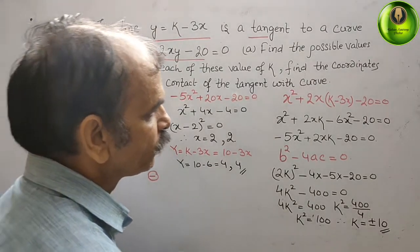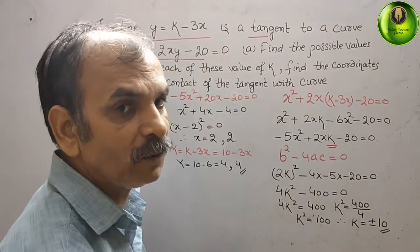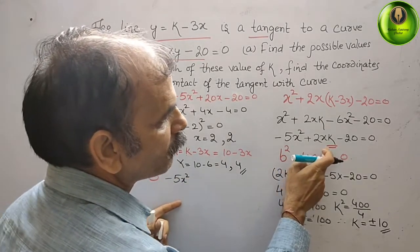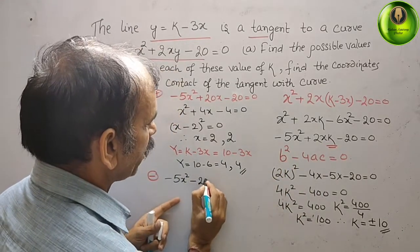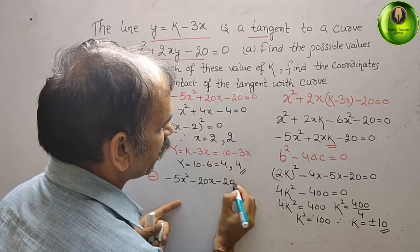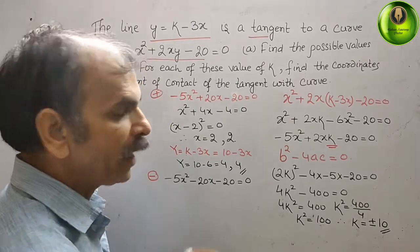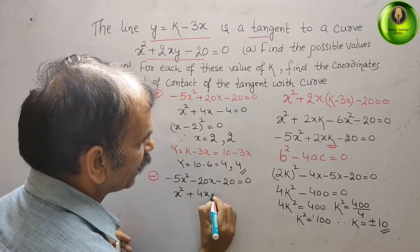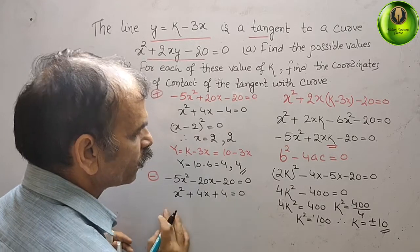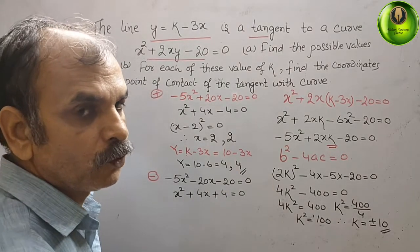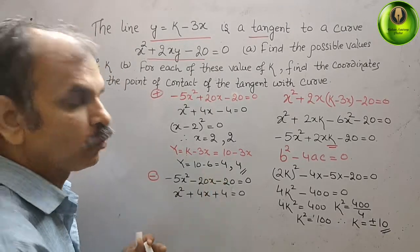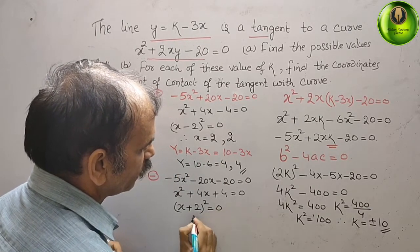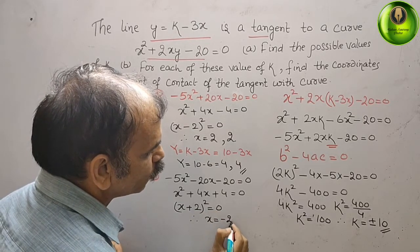Now for k = -10: -5x² + 2(-10)x - 20 = 0, giving -5x² - 20x - 20 = 0. Dividing by -5: x² + 4x + 4 = 0, which is (x + 2)² = 0. Therefore x = -2 (a repeated root).